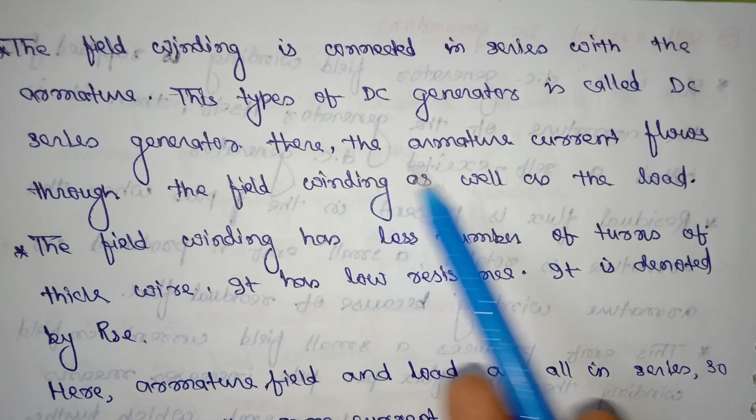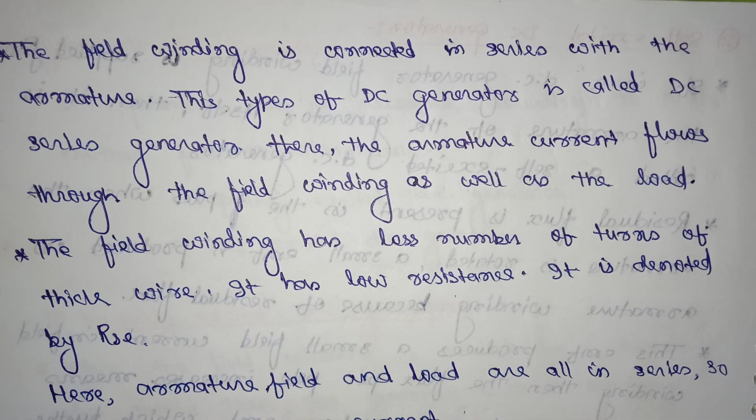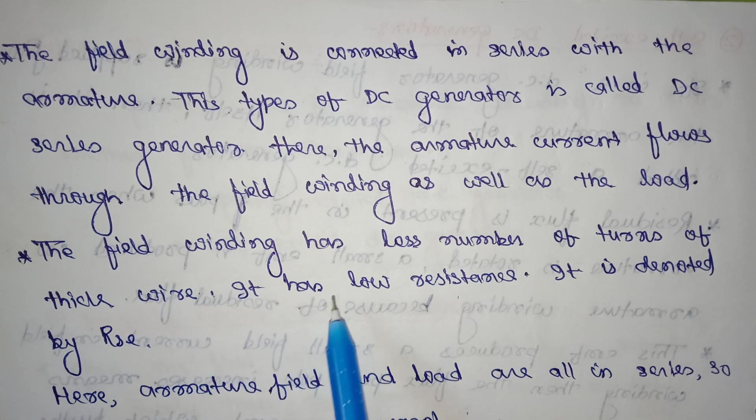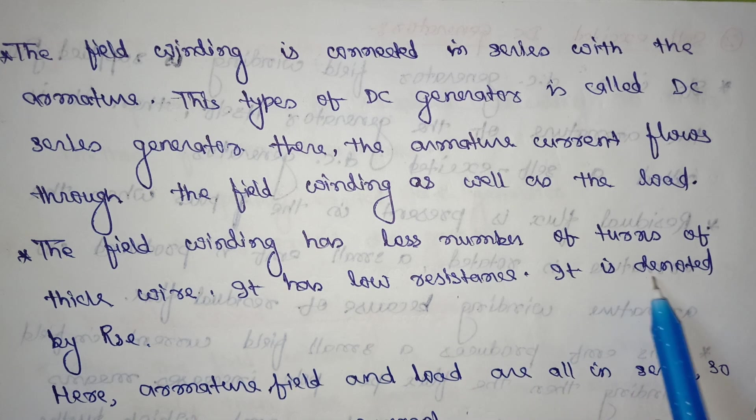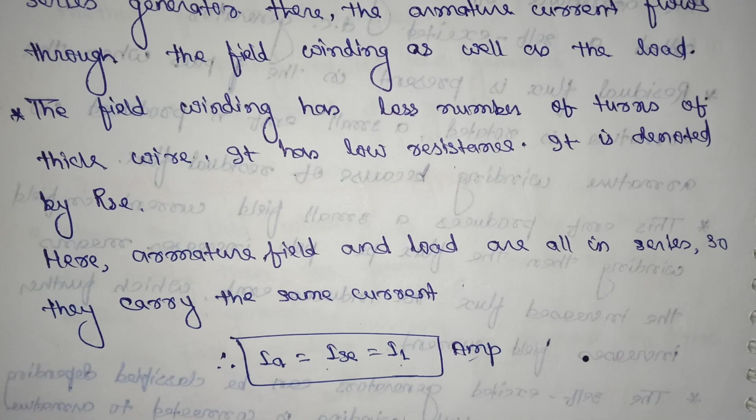Then the armature current flows through the field winding as well as the load. Next point: the field winding has less number of turns of thick wire. It has low resistance. It is denoted by Rse.